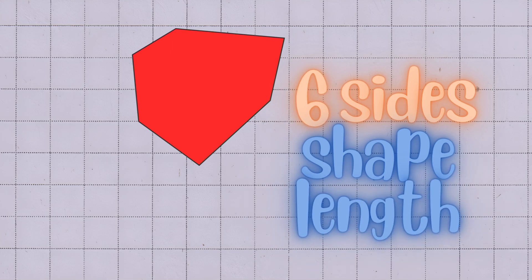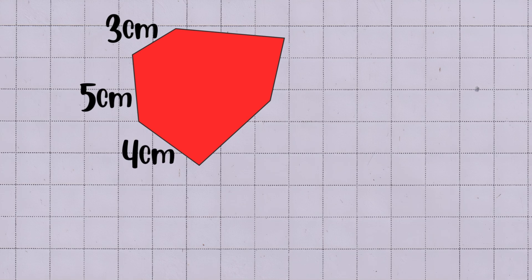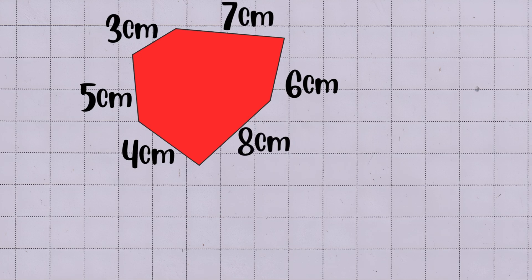In this example, the first side measures three centimeters, the second side measures five centimeters, the third side measures four centimeters, the fourth side measures six centimeters, the fifth side measures seven centimeters, and the sixth side measures eight centimeters.